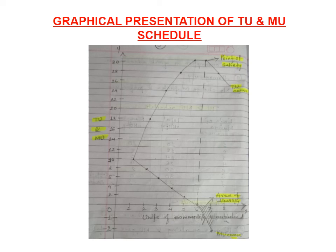These are the observations of the graphical presentation of the TU and MU schedule. Today we studied: what is total utility, the formula of total utility, what is marginal utility, and the formula of marginal utility. A likely exam question is: 'Explain the relationship between total utility and marginal utility' — a four-mark question requiring all these points. Thank you for listening to my video lecture.